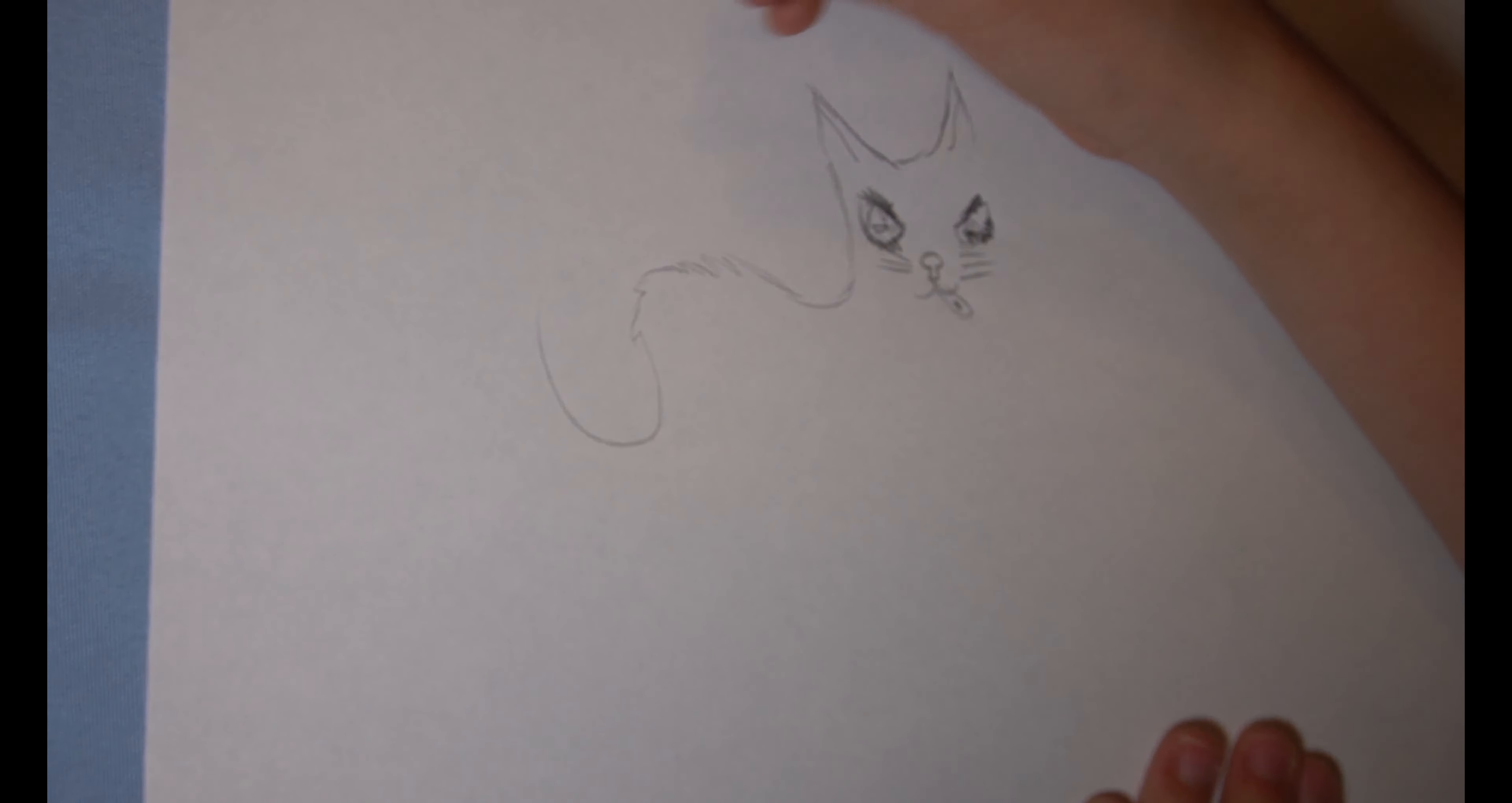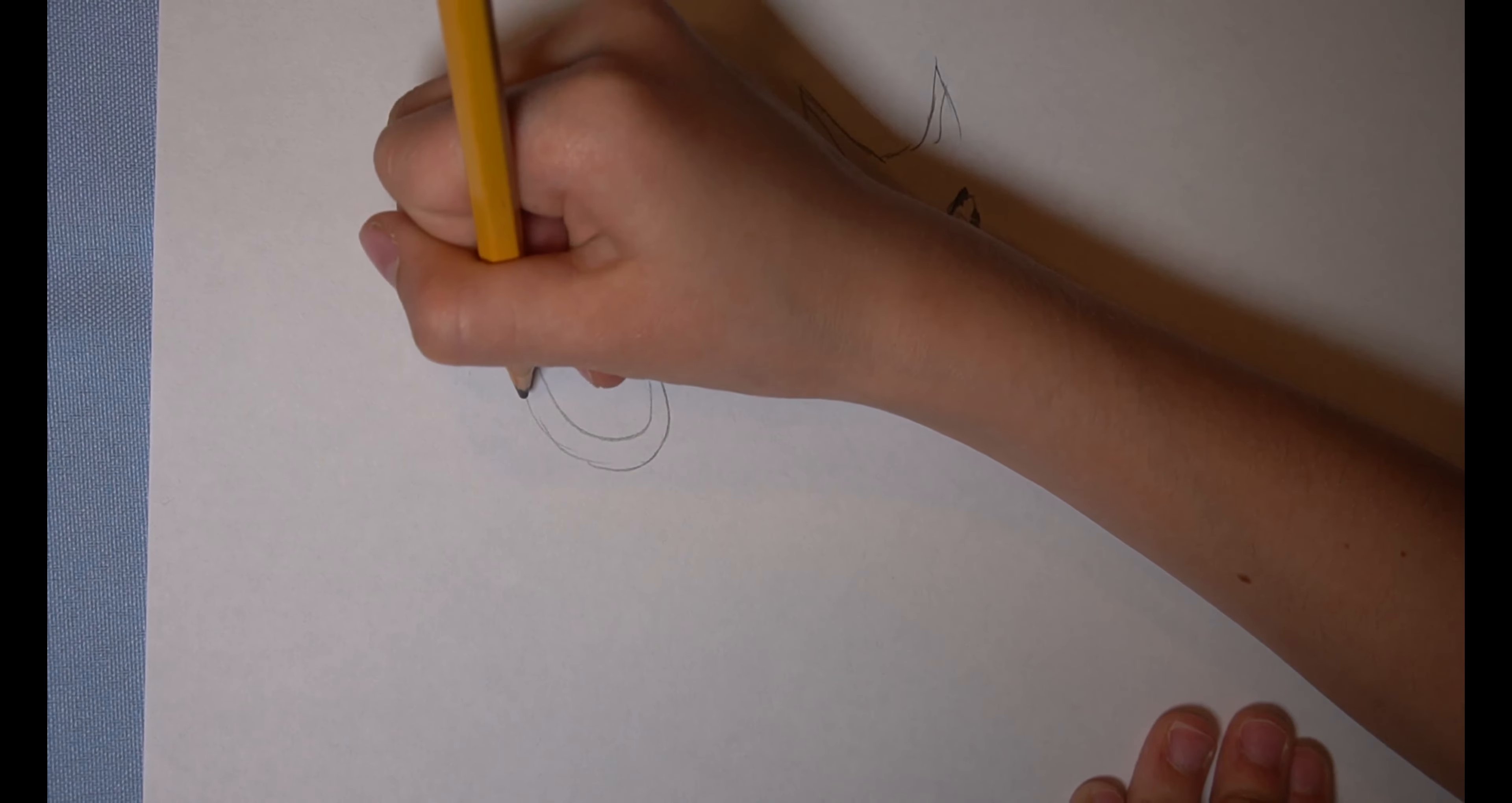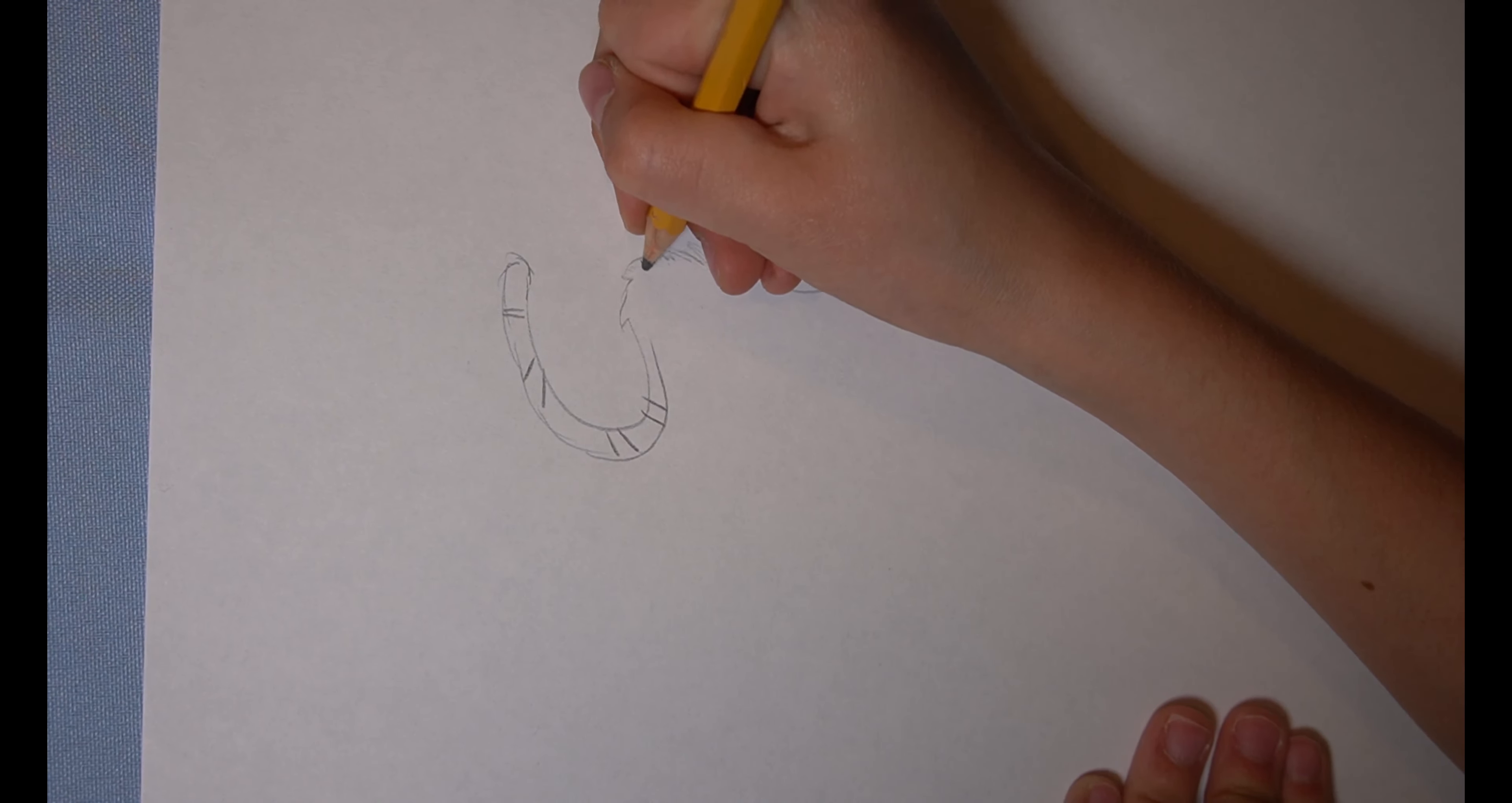Now let's do the tail. So the tail is just like this, like a big hill. You can do any line really. I'm doing some designs on it.